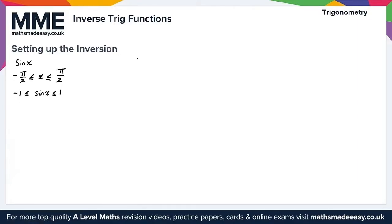For cos x, the domain is restricted from 0 to pi. And the range is from minus 1 up to 1.